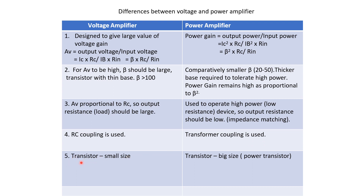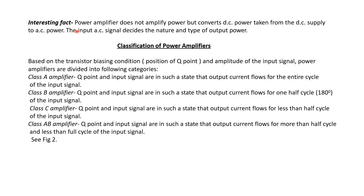In a voltage amplifier, transistors are of small size because the base must be thin for very large beta. In power amplifiers, the transistors have to be of big size because they must bear a large amount of power. If the transistors are thin and delicate with a very thin base, they will burn out. The transistors used for power amplifiers are called power transistors.